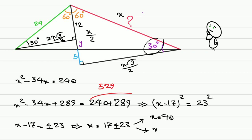Then x is 17 plus or minus 23. We have two possible answers: either x is 40 or it is negative 6. But x is a side length, we cannot accept this, and the answer is x equals 40.